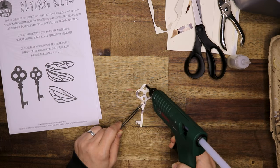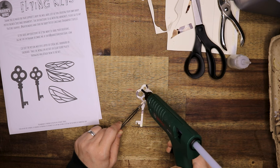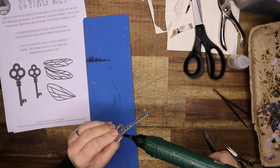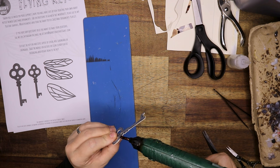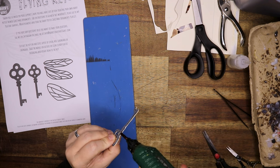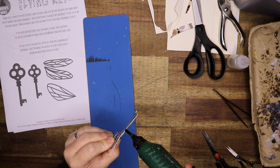With tweezers I'm going to hold down this key—this key is now I think two or three layers, maybe just two layers—and I'm going to cover the entire key with hot glue and then paint it.